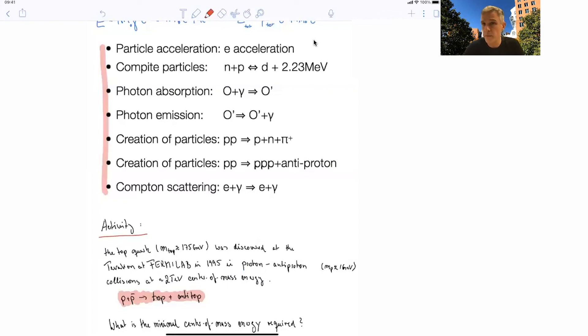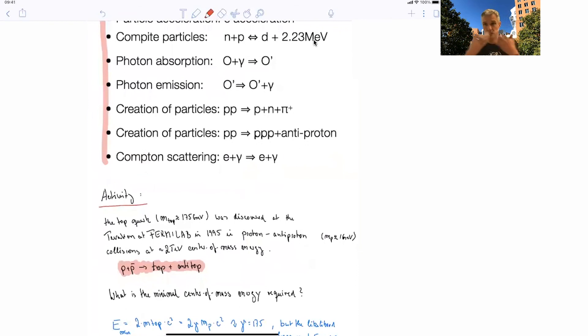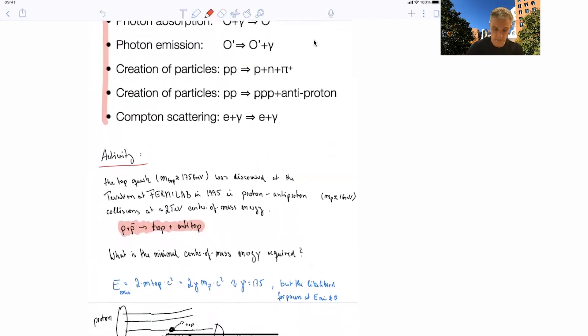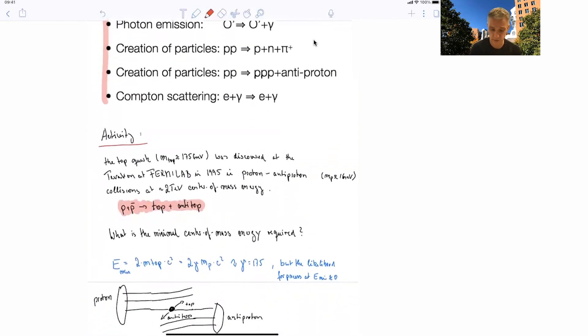And here, we went through a number of examples. The minimal energy, so I have to work this out again. The minimal energy required can be derived or extracted in the center of mass frame, where the top and antitop are produced at rest. And if you do this, in this example, the proton in this collider experiment, the experiment is already conducted in the center of mass frame. So the minimal energy is simply 2 times the top mass times c squared, or 2 times gamma times the mass of the proton times c squared, which gives you a gamma factor of 175.